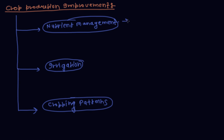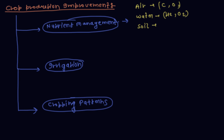The first thing is nutrient management. In nutrient management, like other organisms, plants also require some elements for their growth. These elements come from air, water, and soil. Air gives carbon and oxygen. Water gives hydrogen and oxygen. And soil gives macronutrients.